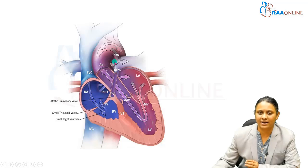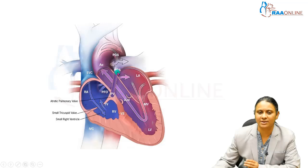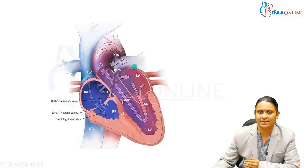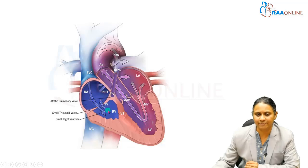The PDA is supplying the pulmonary arteries. Instead of forward flow from the RV to the pulmonary artery, the aorta supplies the pulmonary artery through the PDA.